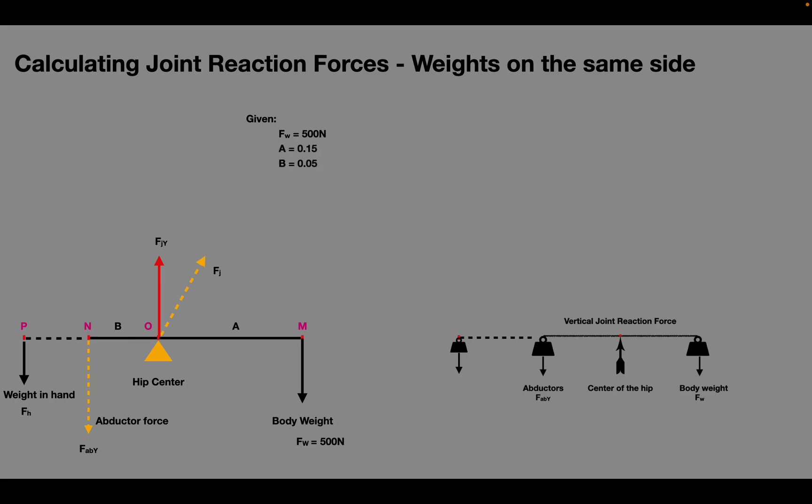body weight lever arm 15 cm, abductor lever arm 5 cm, force due to weights is 30 N, and the lever arm of the weights held is 20 cm. Now, we need to calculate the force generated by the abductors and joint reaction force.